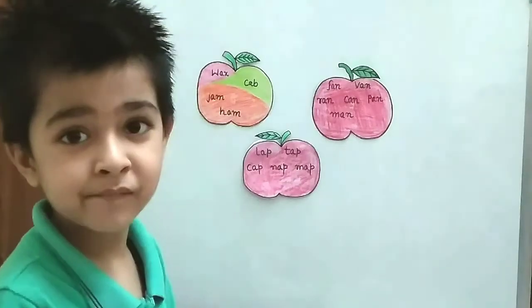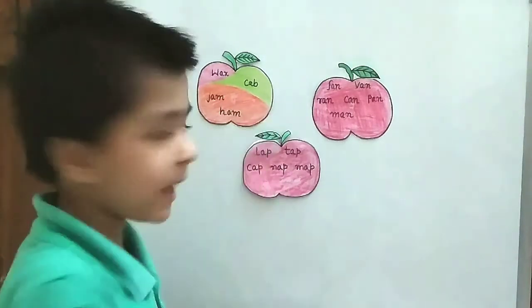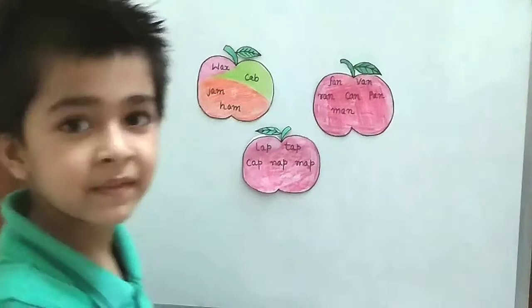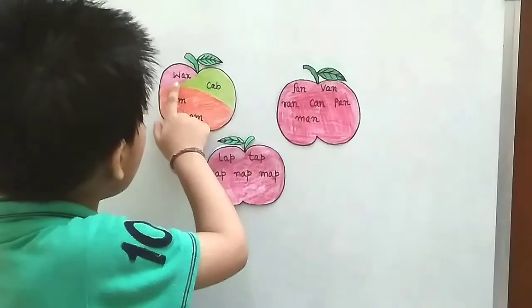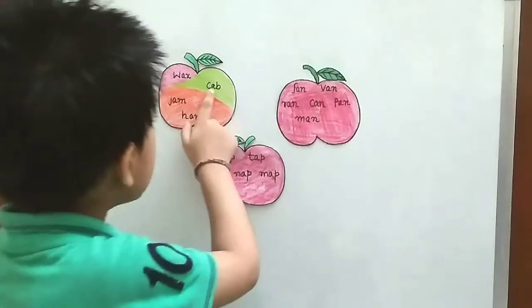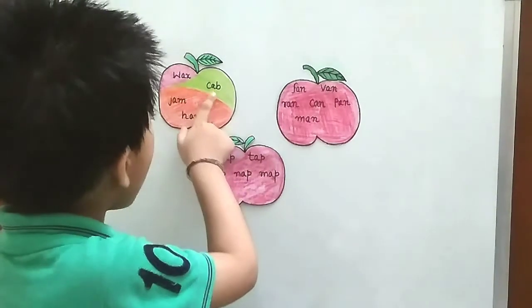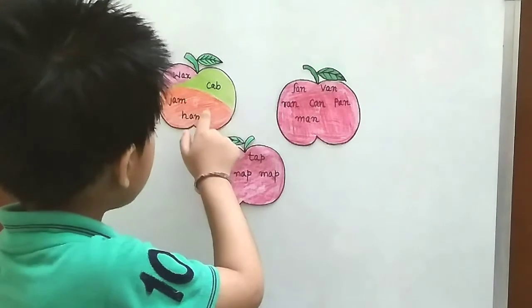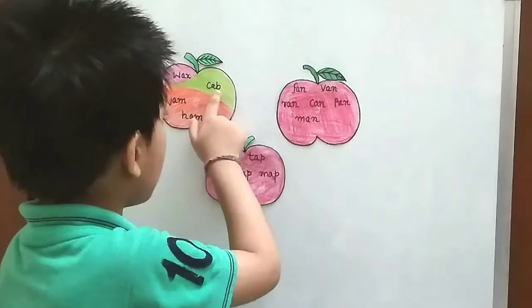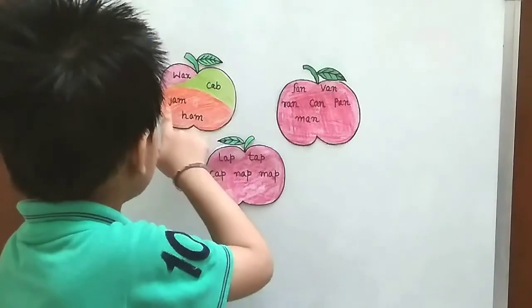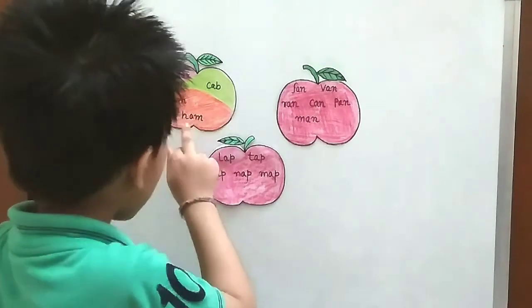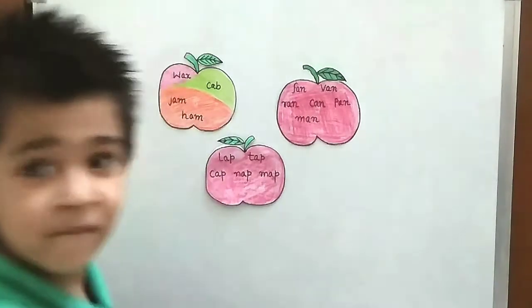Which apple do you want? I want this apple. Okay, then read all the words written on that apple. W-A-X, wax. C-A-B, cab. J-A-M, jam. H-A-M, ham.